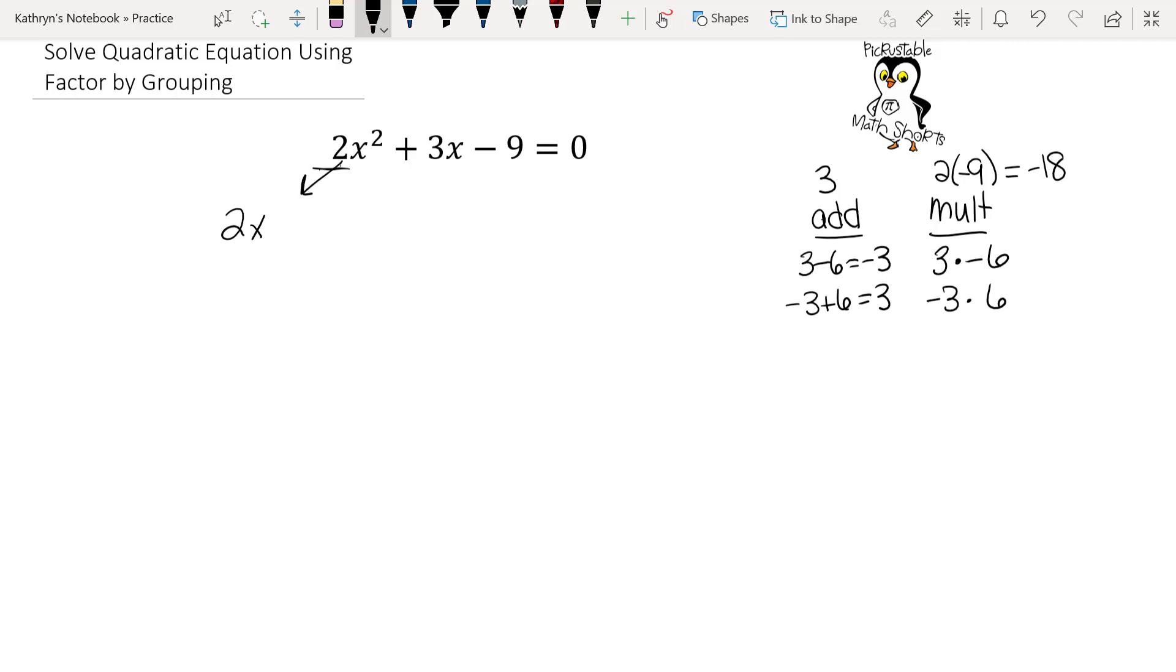We're going to rewrite 2x squared. Now instead of plus 3x, we're going to write our two magic numbers: minus 3x plus 6x, then minus 9 equals 0.